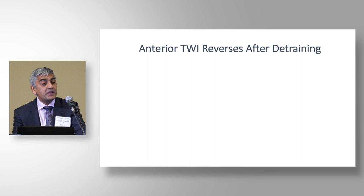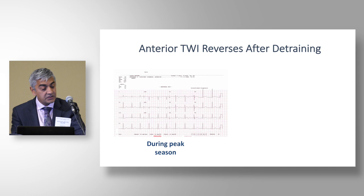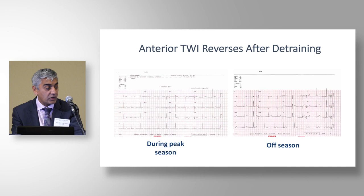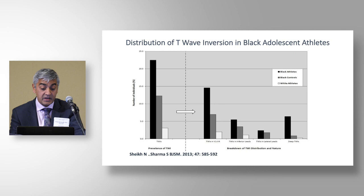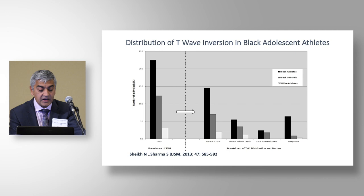Why do we think anterior T-wave inversion is normal in black athletes? There are four reasons. First, it resolves quickly with detraining — four weeks off-season and T-wave inversion in V1 to V3 is completely gone. Second, data from adolescents shows black athletes have more T-wave inversion than white athletes, and anterior, inferior, and lateral T-wave inversion is more prevalent in black adolescent athletes. This pattern exists in adolescence — it doesn't just start in adulthood.